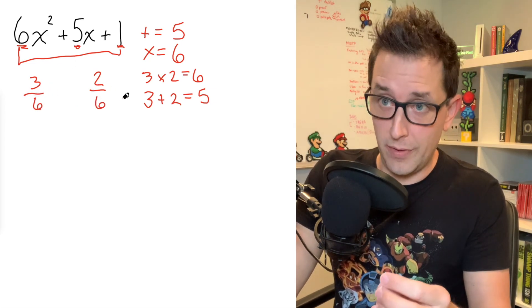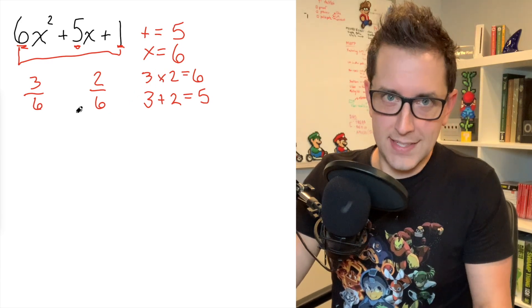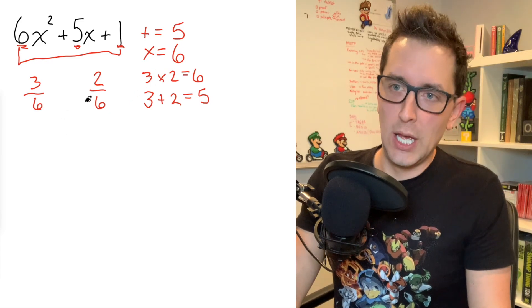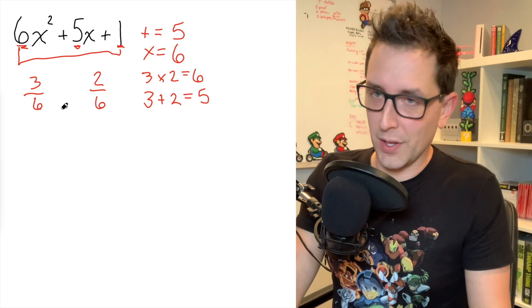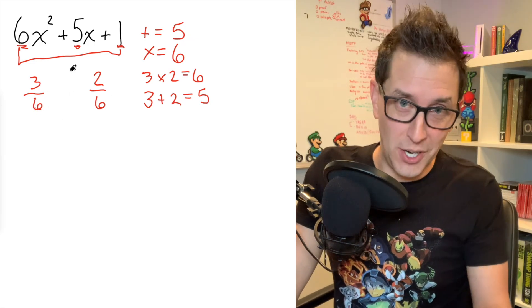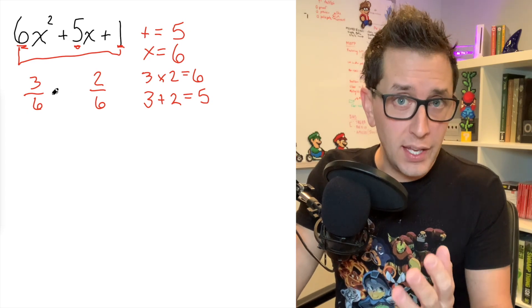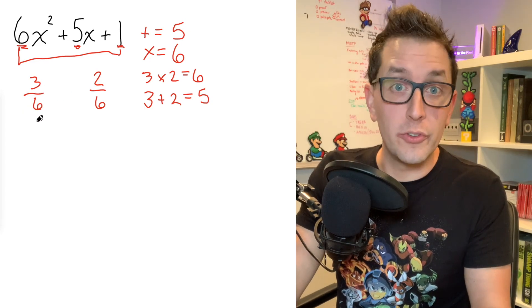And what you're going to do is just sort of randomly divide them by the value of a. And in this case, the value of a is six. And I say randomly because it doesn't seem to make any sense why you're doing this, but I promise this is going to work and it's going to be a lot simpler than anything else you've done before when it comes to trinomial factoring. And so what we're going to do is take those fractions that we created and we're going to reduce them to lowest terms.